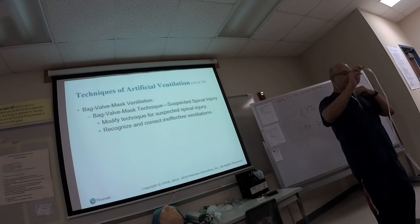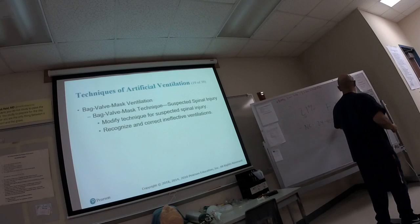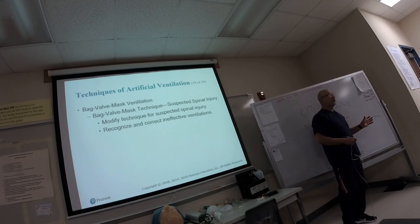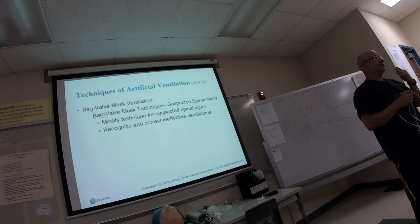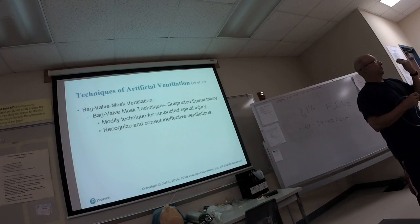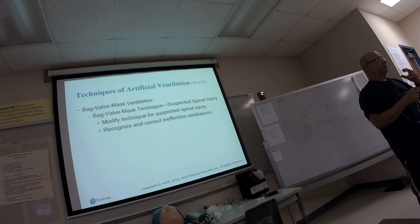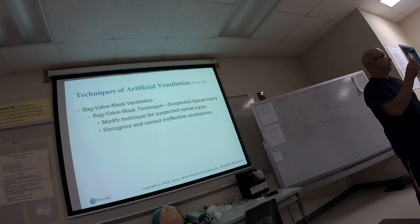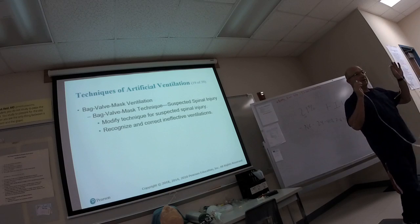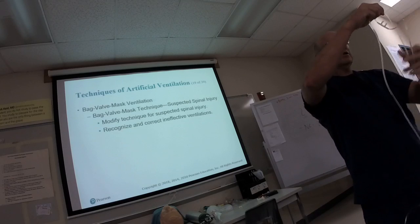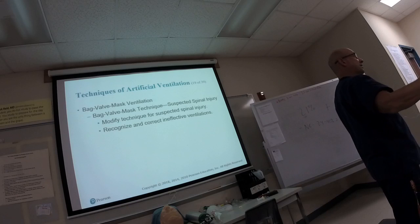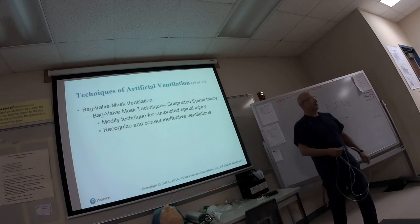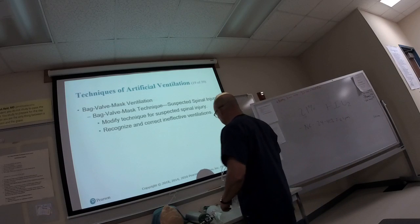The dose is 2–6 liters per minute; realistically you'd rarely go more than 4, because 6 liters is uncomfortable — it starts blowing back into the nose and gets very dry. Oxygen is super dry, which is why sometimes you humidify it by passing it through water. So: nasal cannula, indication is mild respiratory distress, increases FiO2 to 24–40%, dose is 2–6 liters per minute.